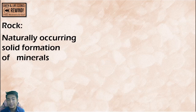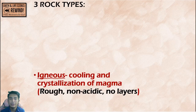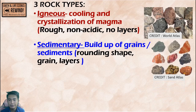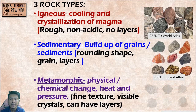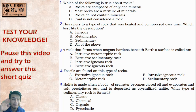Rock is a naturally occurring solid formation of minerals with the MONS characteristics, and it can be divided into three groups: igneous, sedimentary, and metamorphic rocks. Pause this video and try to answer this 5-item quiz, then resume the video to know the answers.